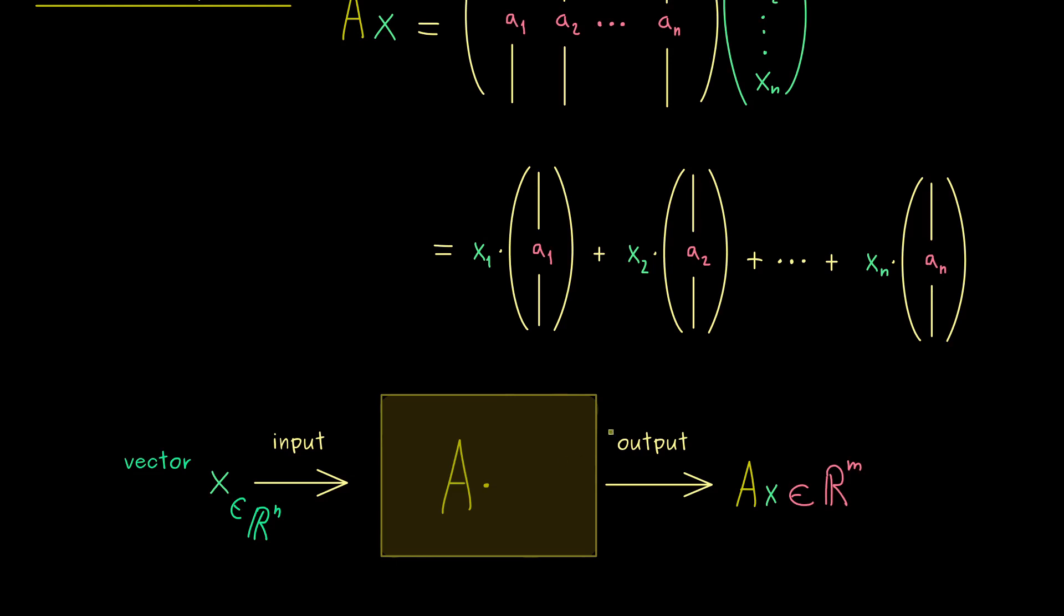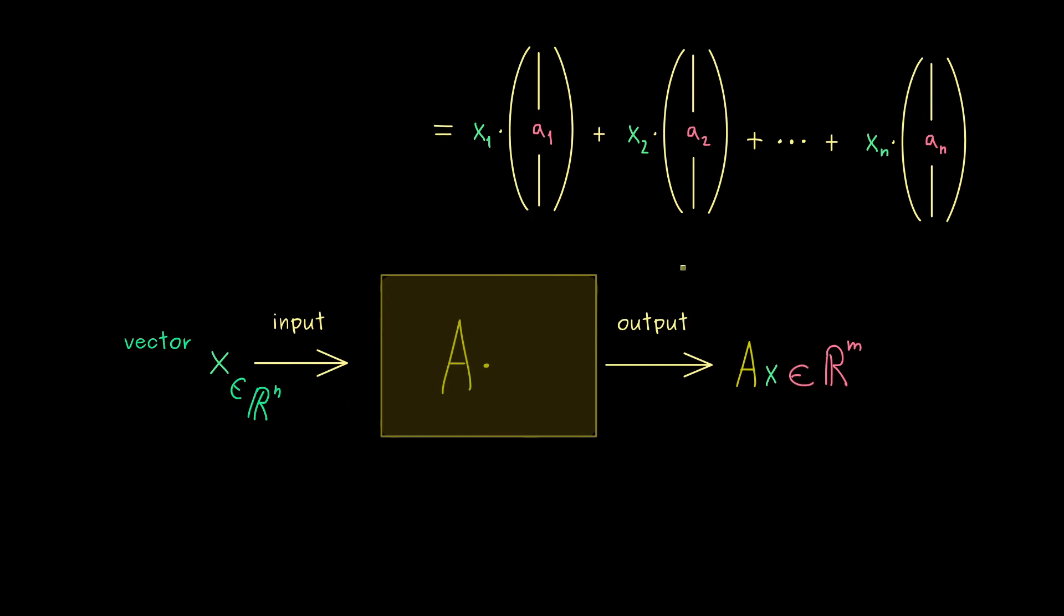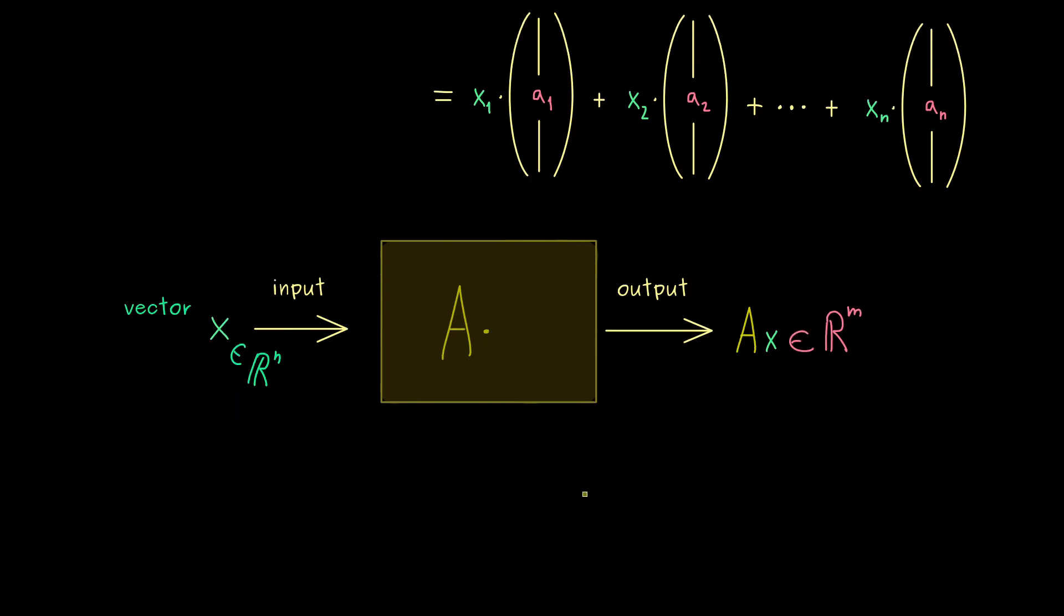Indeed, I would say, this is very important to remember, Ax is always a linear combination of the columns of A. On the other hand, such a machine here, where we have an input and an output, we already know in mathematics. We call it a map.